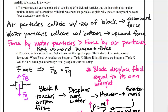The valve is then opened and water flows out through the pipe. The surface of the water moves downward. When block A touches the bottom of Tank X, block B is still above the bottom of Tank X. Which block has a greater density? Since the blocks are floating, we know that the buoyant force is equal to the gravitational force, and the blocks displace a fluid equal to their own weight.